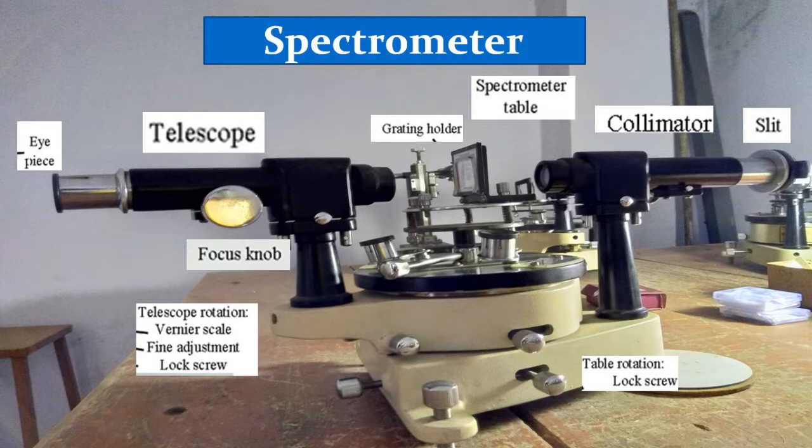A prism table is used for mounting the prism, grating, etc. It consists of two circular metal discs provided with three leveling screws. It can be rotated about the vertical axis passing through the center, and its position can be read with verniers V1 and V2. The prism table can be raised or lowered and fixed at any desired height.